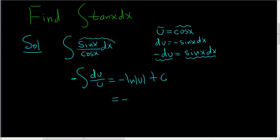And u was cosine, so negative natural log absolute value cosine x plus a constant. That's it.